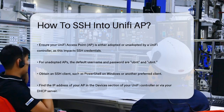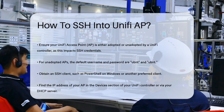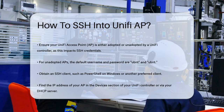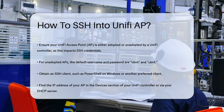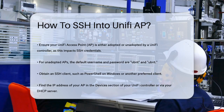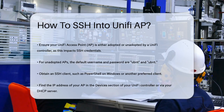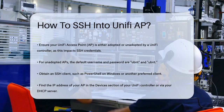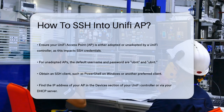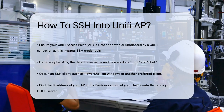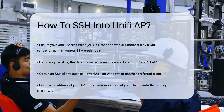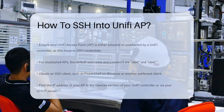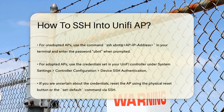To start, you'll need an SSH client. This could be the built-in SSH client in PowerShell on Windows or any other SSH client you prefer. Make sure you have the IP address of your access point, which you can find in the Devices section of your UniFi controller or by checking your DHCP server.